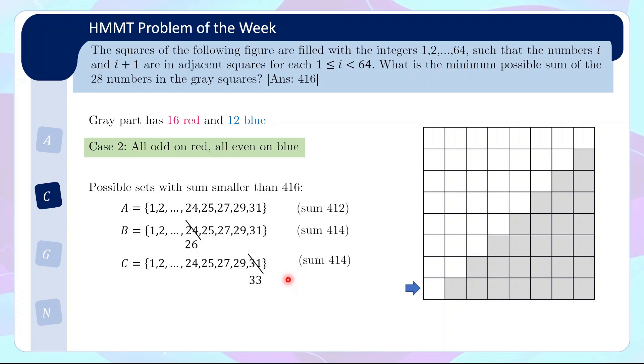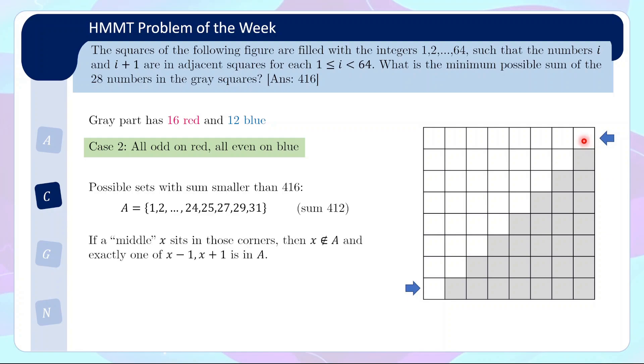Unfortunately, a common thread of logic can be used to eliminate all of them. Let's take a look at set A. How would we decide that this cannot be the case? We cannot fill out all the grey squares with these numbers. There will be some special squares in this 8×8 that we consider. And the special squares are actually the corners. These two white corners here. Now what is so special about them?